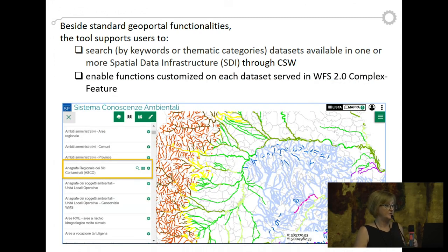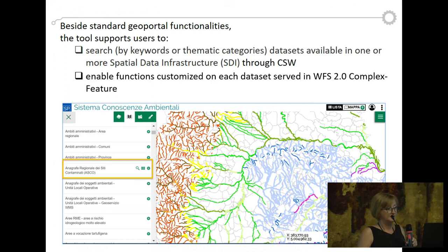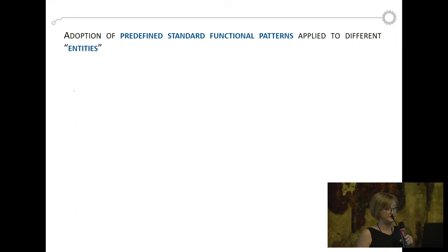We enable more than this. For the normal WMS layers we have an icon that permits loading data on the map. But we have two additional functionalities: one is the query builder, and the other is a report list. The particularity is that we can predefine standard functional patterns and apply them to different entities and different datasets. So we reuse all the same code to describe a new object.